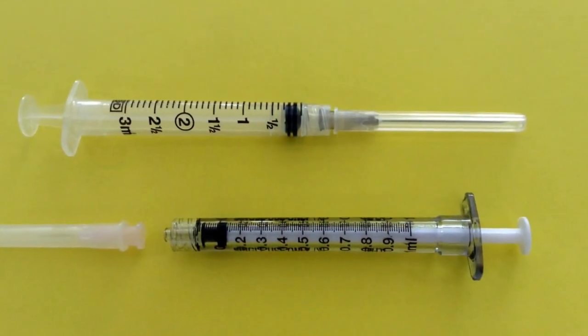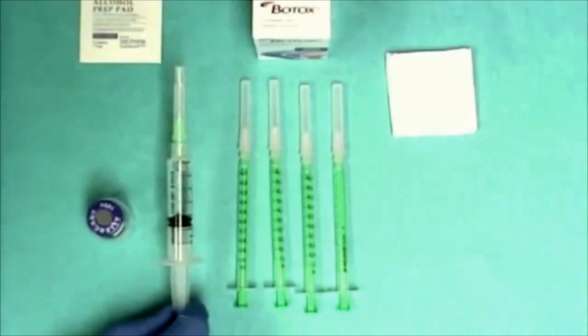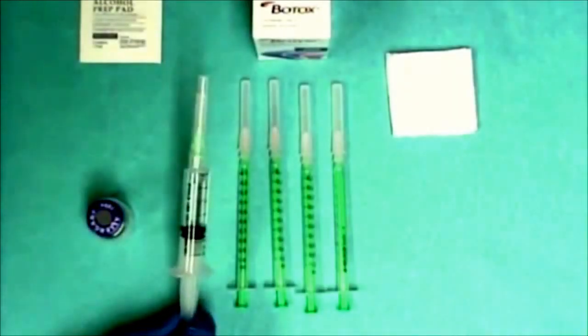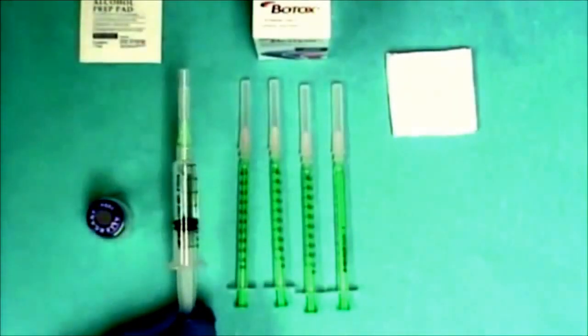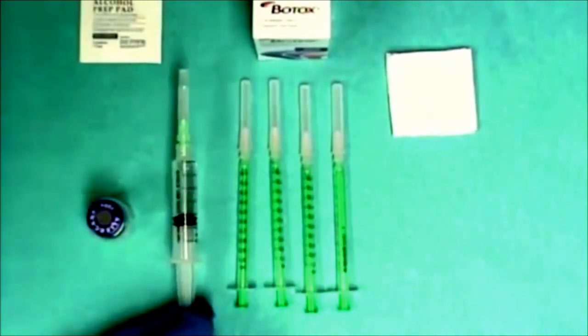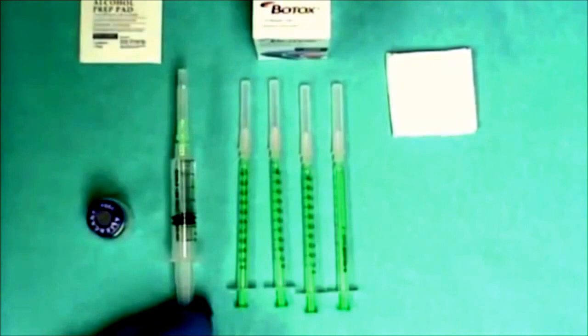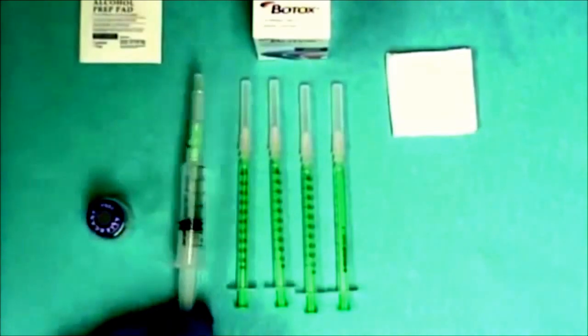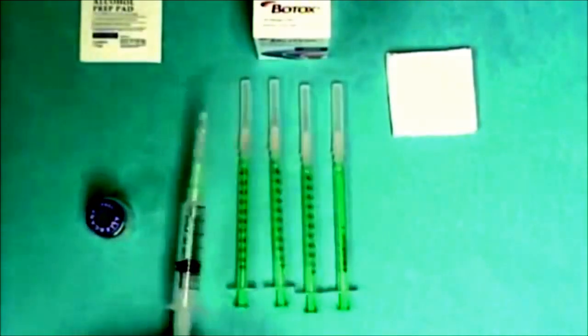Also this is the luer lock attachment, which is the standard twist lock between syringe and needle. So with your 3 or 5 cc syringe you aspirate 2.5 cc of saline, which is the standard recommended manufacturer volume to reconstitute a 100 units vial of Botox.